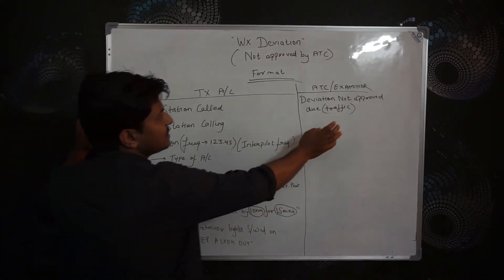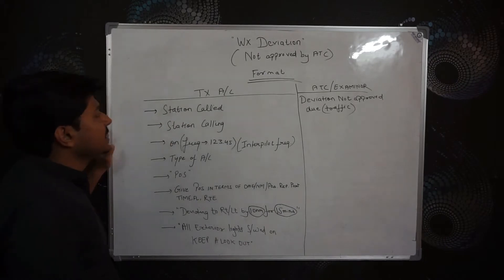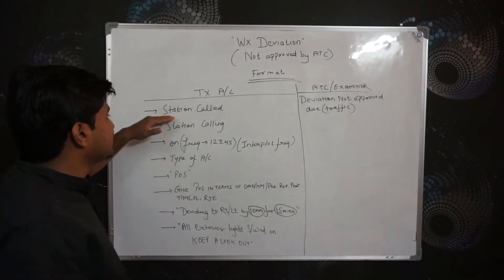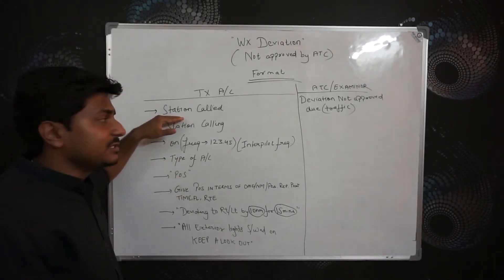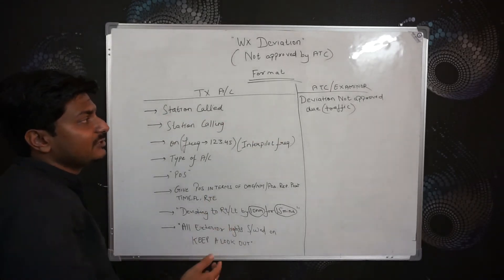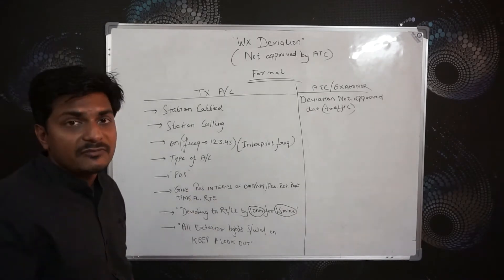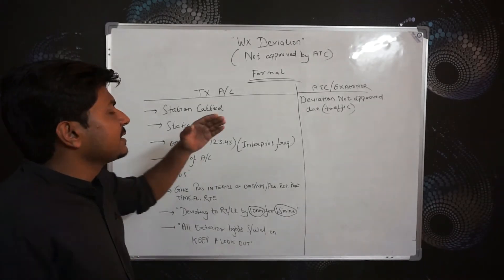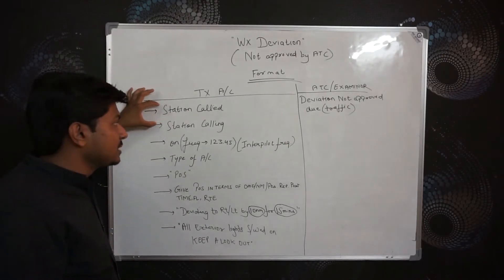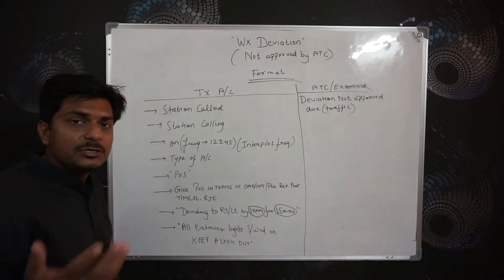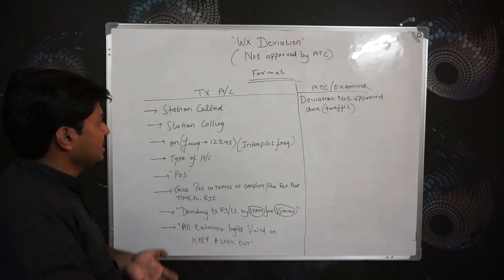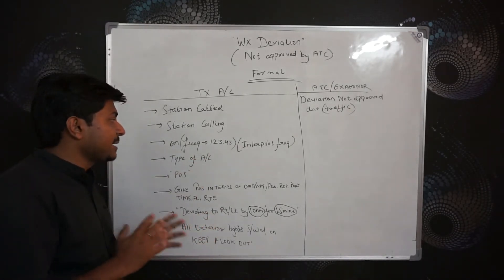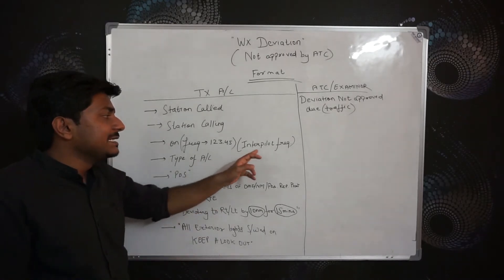First, we'll see the weather deviation format which was not approved by ATC. When ATC says deviation not approved due to traffic, the aircraft transmits using a station call — which is the call sign of the conflicting traffic that ATC has named, for example Air India 421. You then state your own call sign, followed by the inter-pilot frequency, which is 123.45.